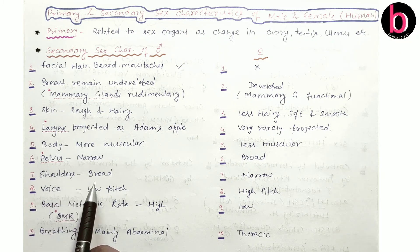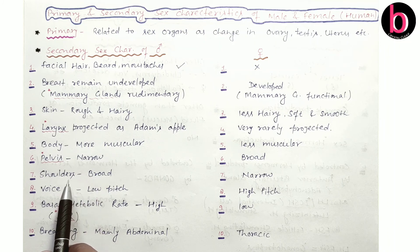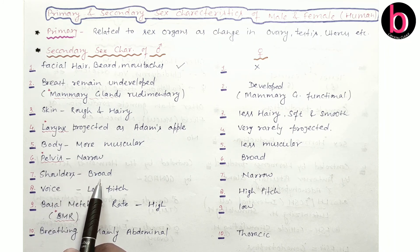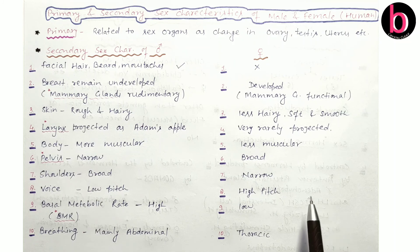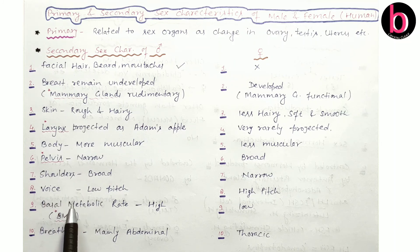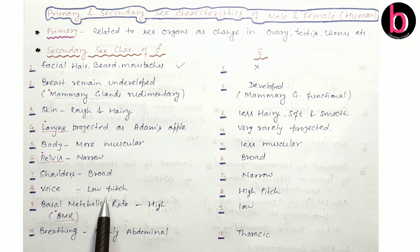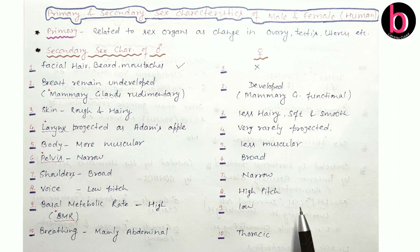Regarding shoulders: in the case of human males, shoulders are broad — shoulders are related with the pectoral girdle — while in females there are narrow shoulders. Next is about voice: in the case of human males, the voice is low pitch, while in females the voice is high pitch.